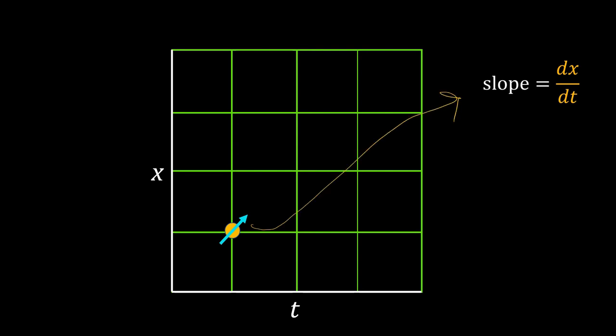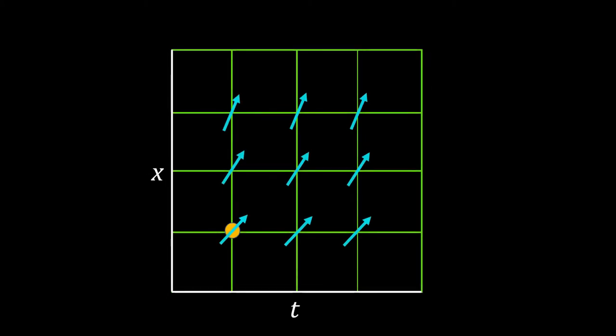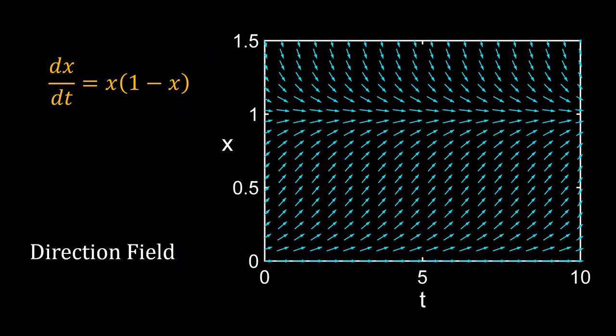Fill the grid with arrows with the correct slopes. This way I have made the diagram for the given ODE. This diagram is called a direction field. The arrows show the direction in which x will change with time.